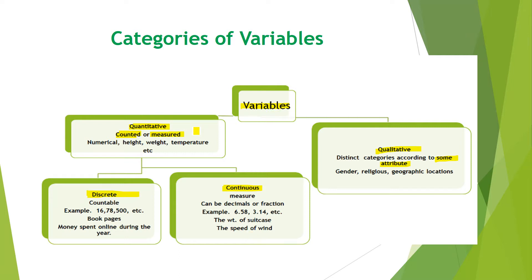Variables are divided into two categories, quantitative and qualitative. Quantitatives are further divided into two categories, discrete or continuous. If you count, it is countable and it is measurable.